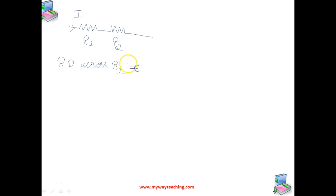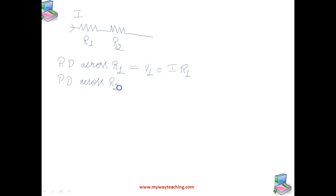By Ohm's law, we can write the potential difference across R1 as V1 = IR1, and similarly the potential difference across R2 as V2 = IR2.